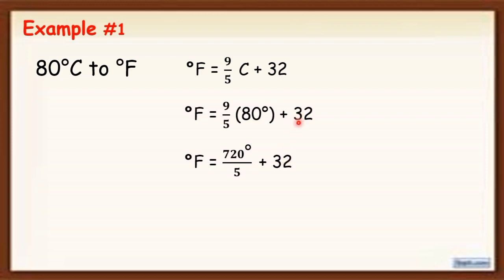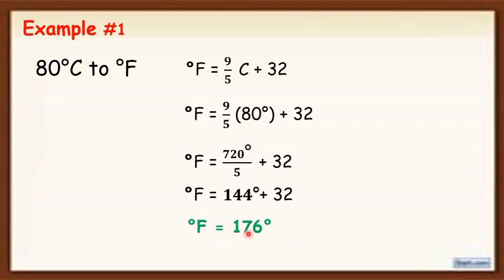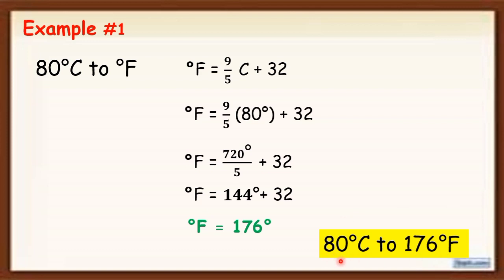We bring down the 32 first and simplify what's inside the parentheses. Divide 720 by 5 — the answer is 144. Then bring down 32, so 144 + 32 gives a final answer of 176 degrees. Therefore, 80 degrees Celsius is equal to 176 degrees Fahrenheit.